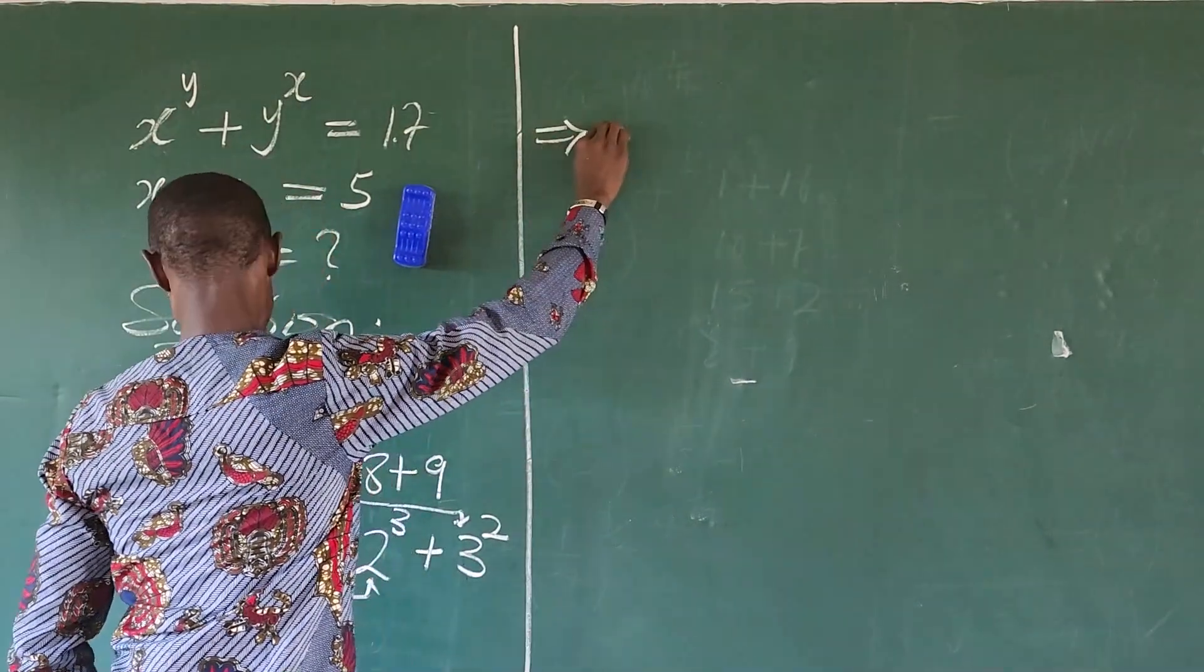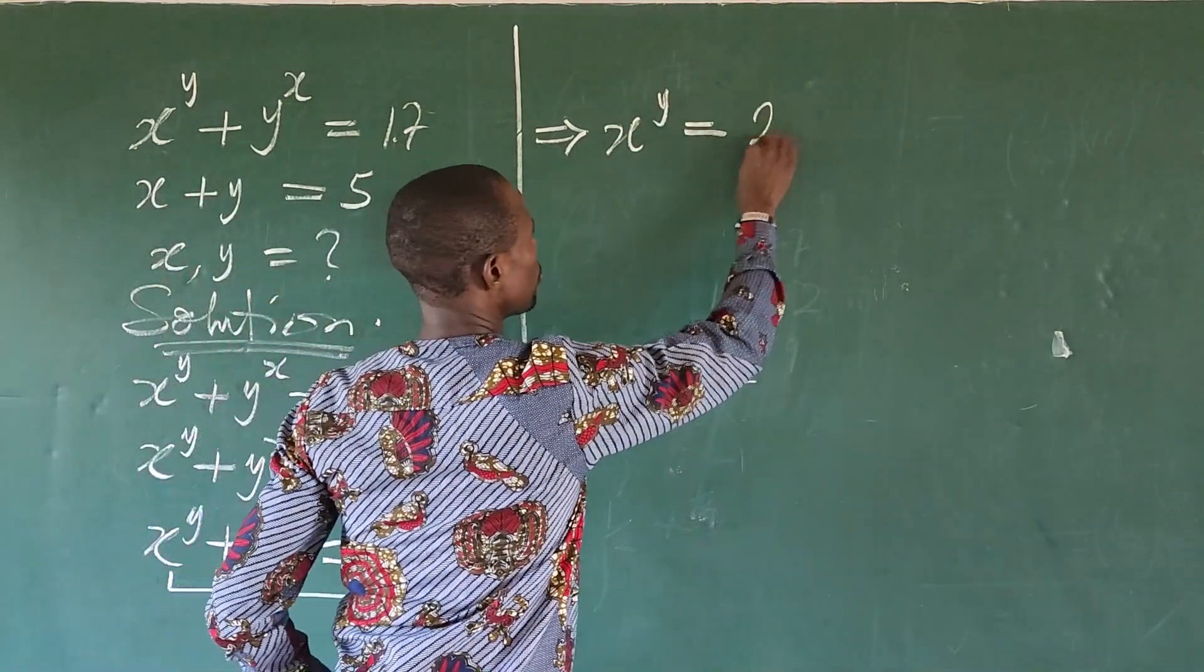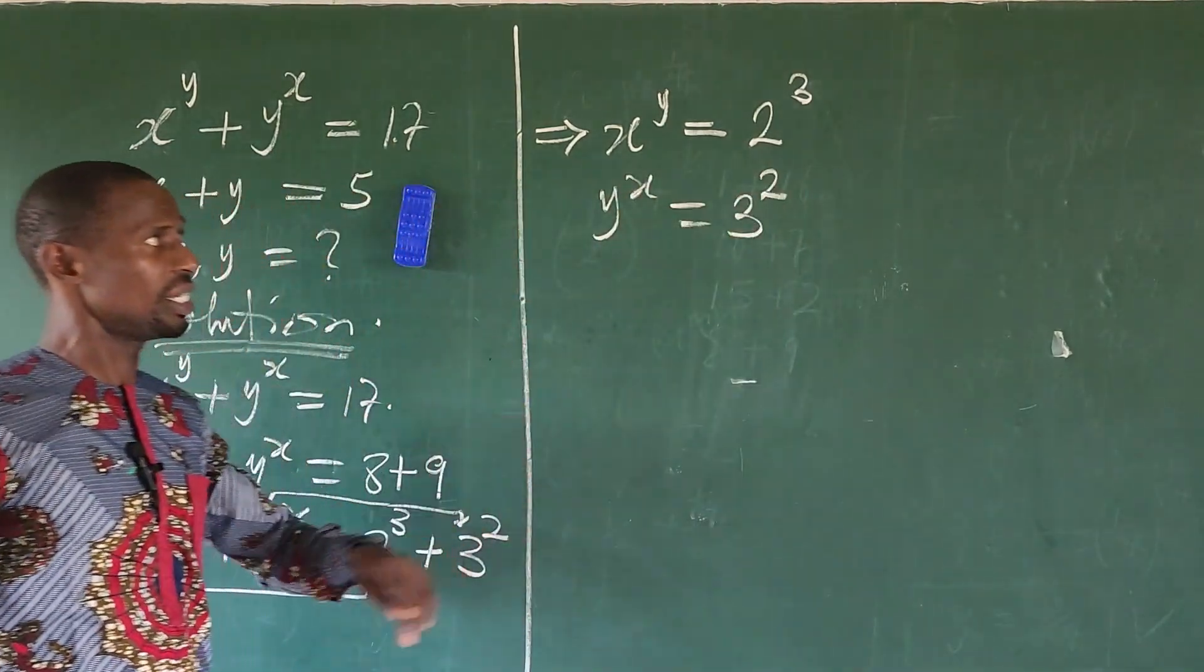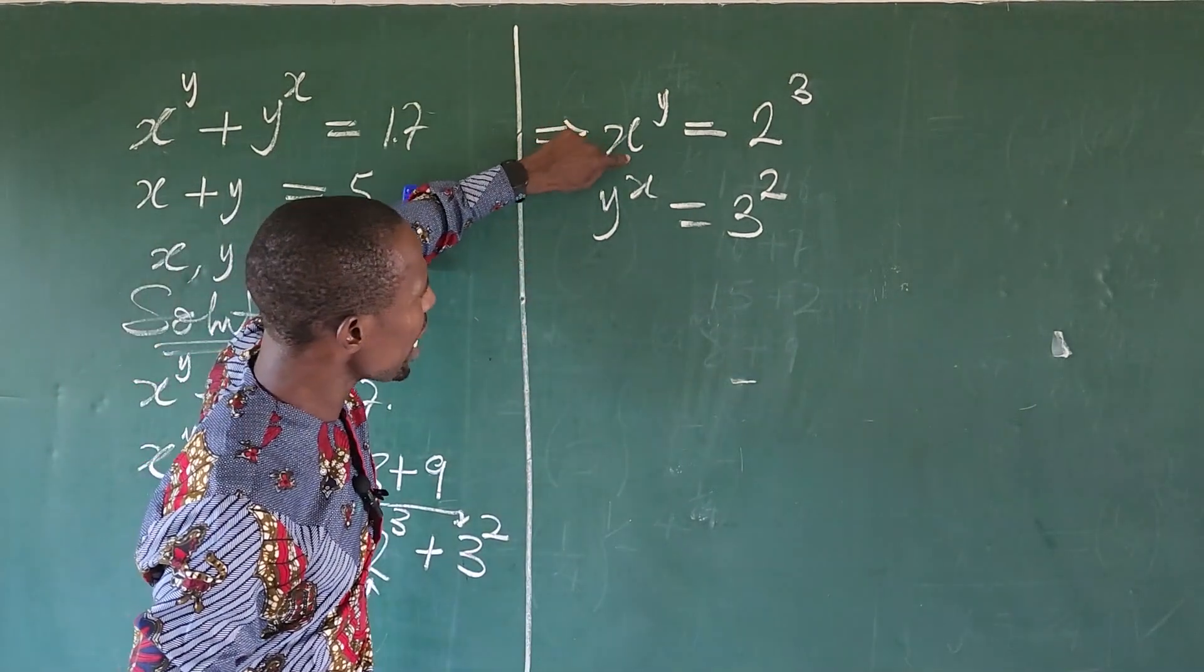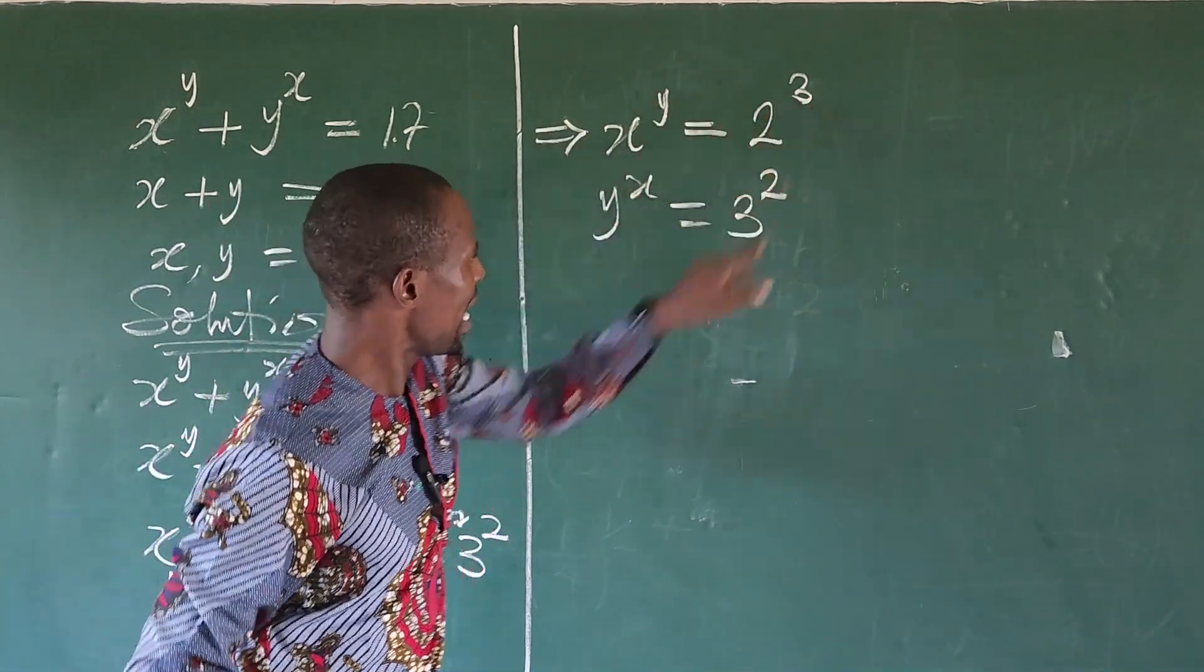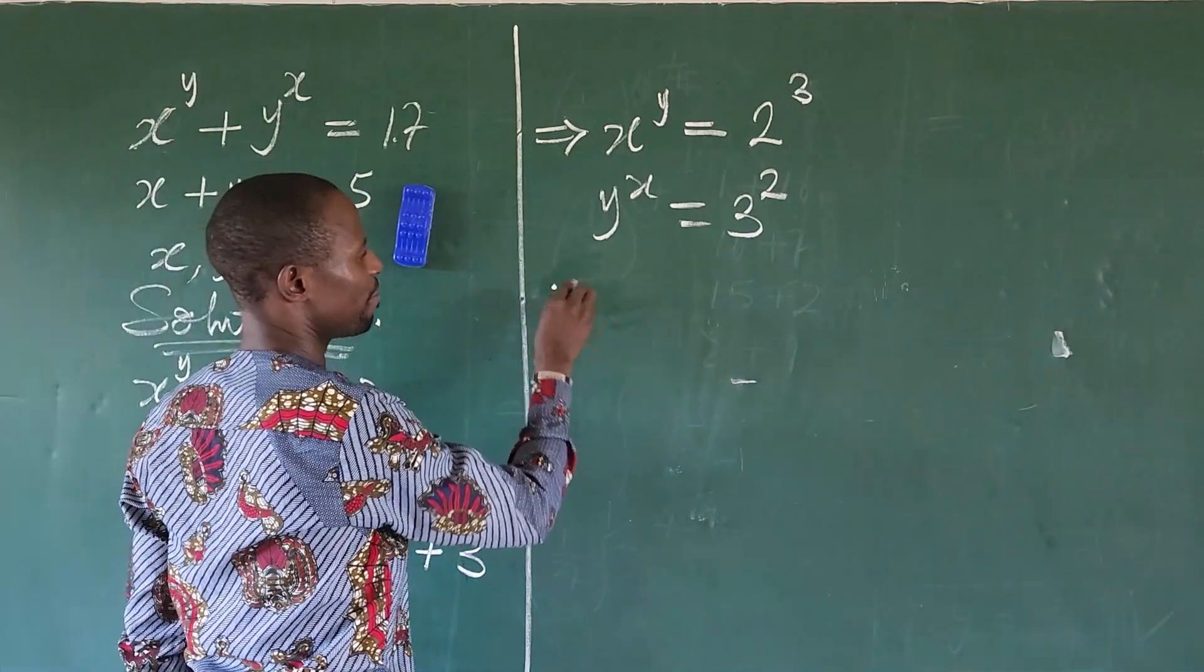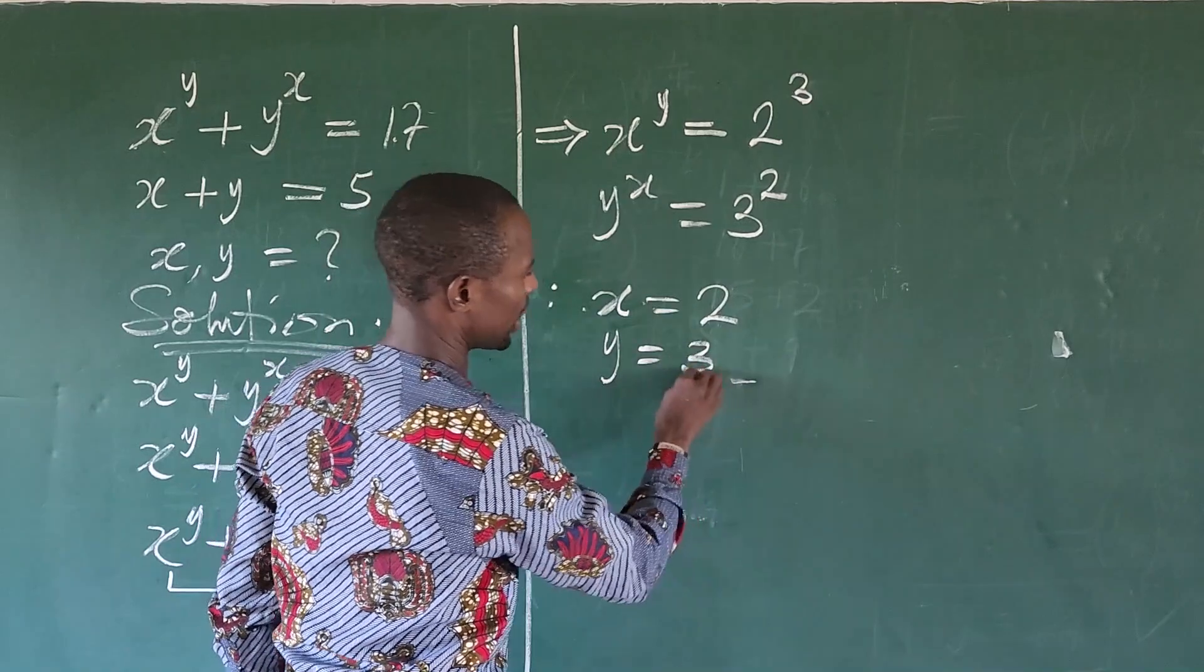Let's continue on this side of the board. We're going to have here. This now implies that your x to the power of y is equal to your 2 to the power of 3. And your y to the power of x is equal to 3 to the power of 2. What do we have here now? What does that mean? It means your x is equal to 2. Your y is equal to 3. Again, look at it here now. Y is equal to 3. x is equal to 2. Therefore, your x is equal to 2. And your y is equal to 3.